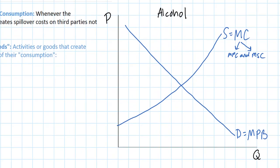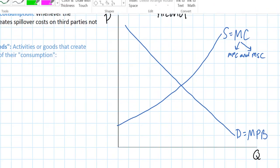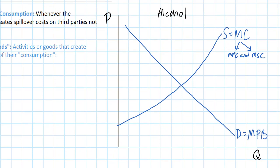So where's the market failure in this graph? First let's identify the free market equilibrium quantity of alcohol at the intersection of supply and demand — this will be our equilibrium quantity. The free market equilibrium price is also determined at the intersection of supply and demand — this is our equilibrium price.